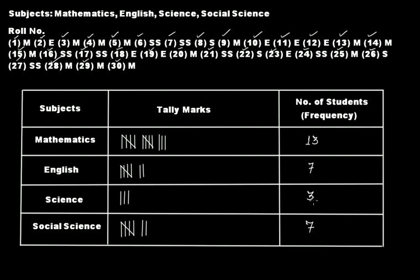This is the frequency distribution table. By quickly looking at this table, you can easily tell how many students like mathematics, English, science, or social science more than other subjects. In our next video tutorial, we are going to discuss grouped frequency distribution, how it differs from a regular frequency distribution table, and the importance of using it. See you in the next video.